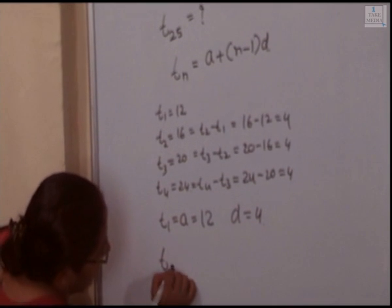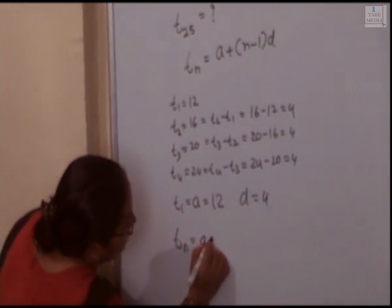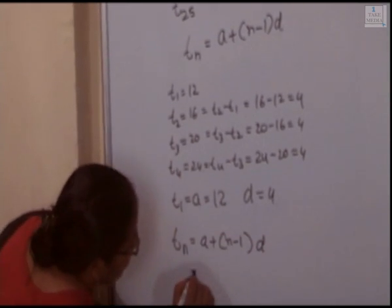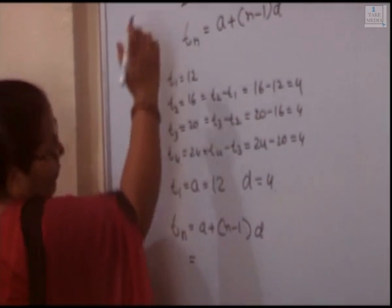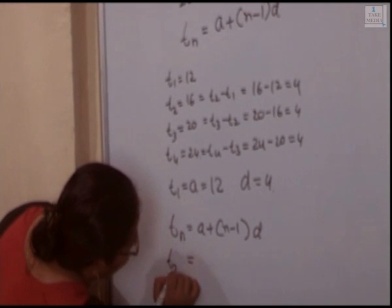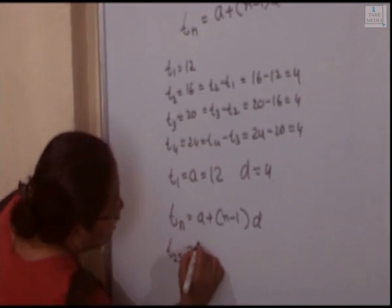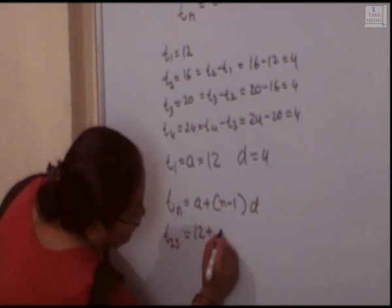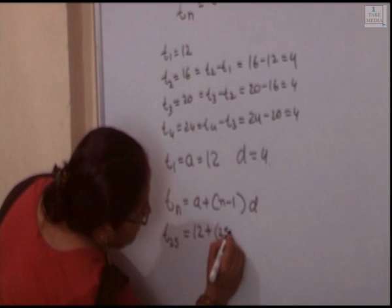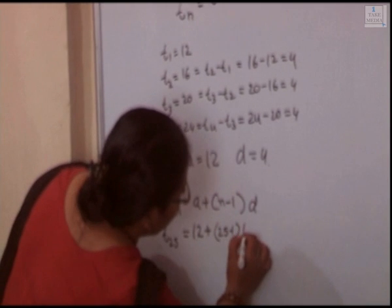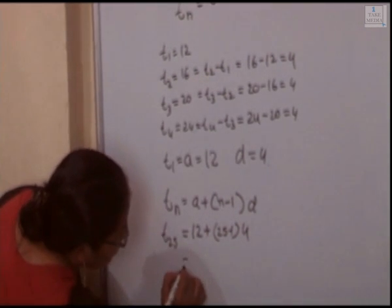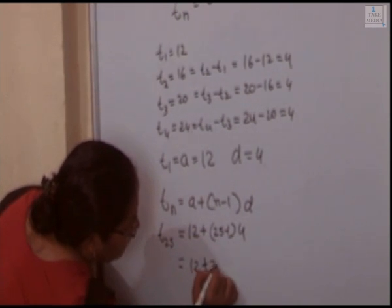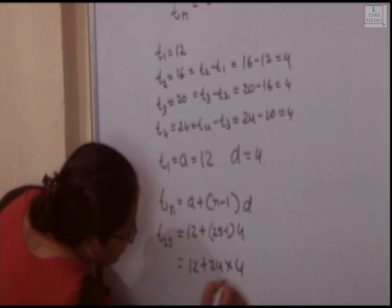The equation is for T25. So A value is 12, plus N minus 1, where N is 25, so N minus 1 is 25 minus 1, and the common distance is 4.